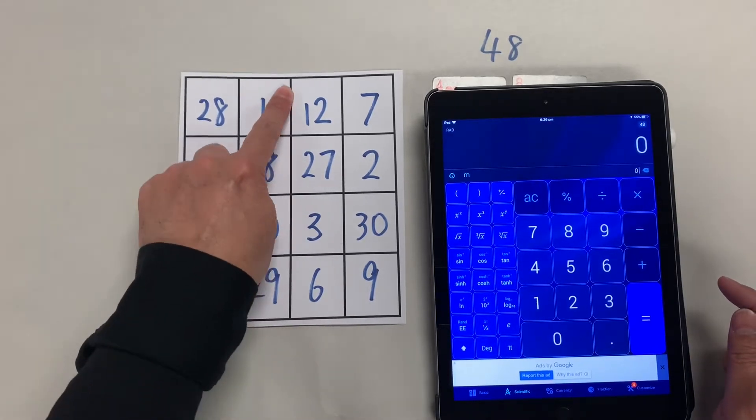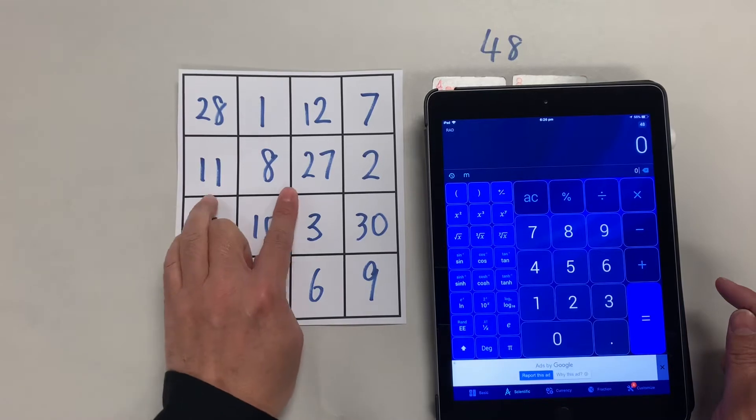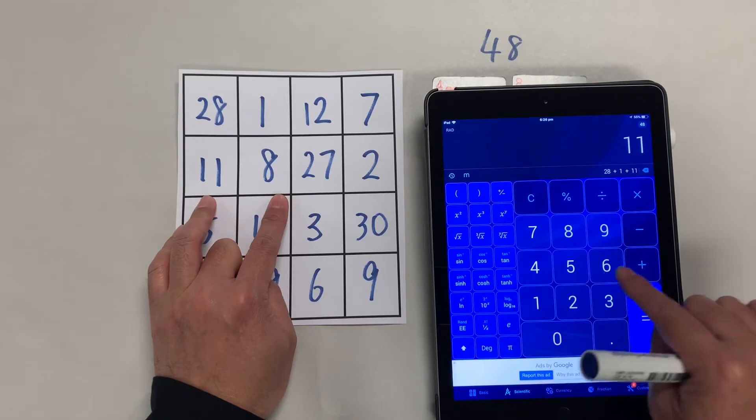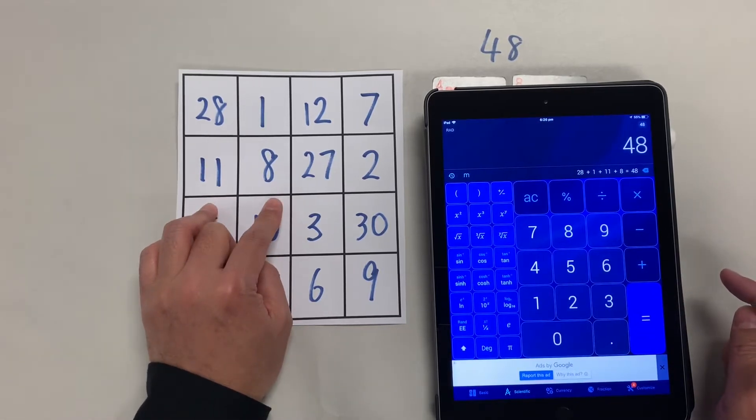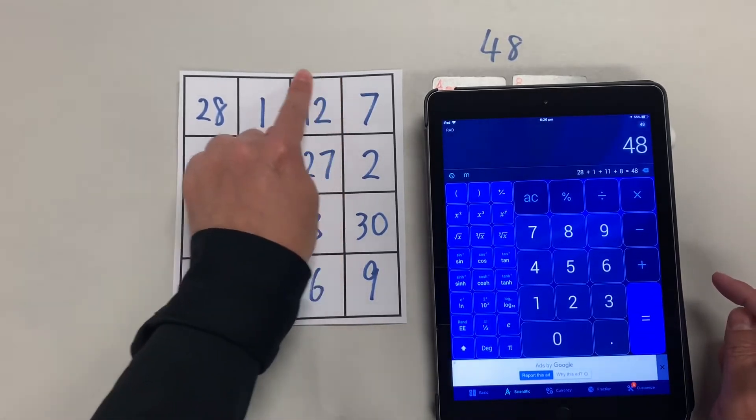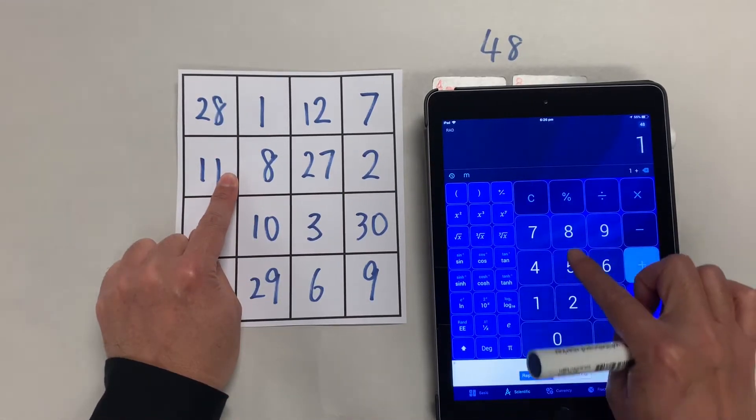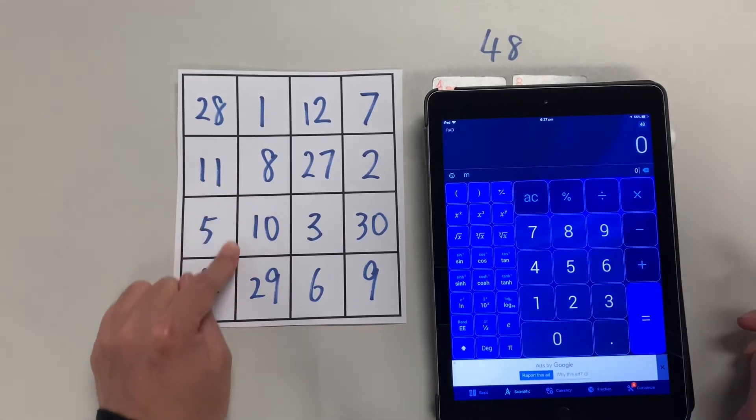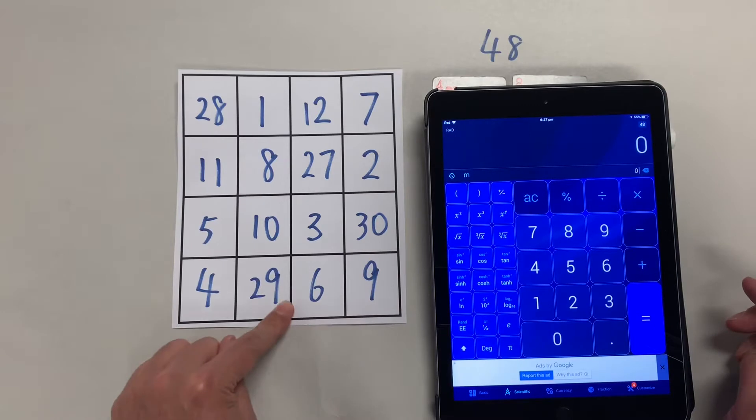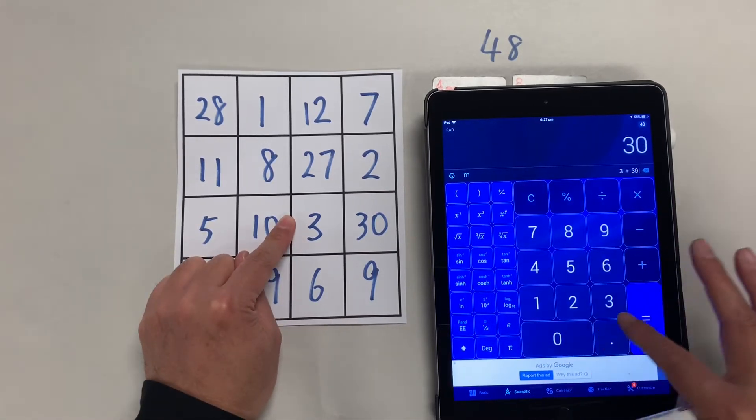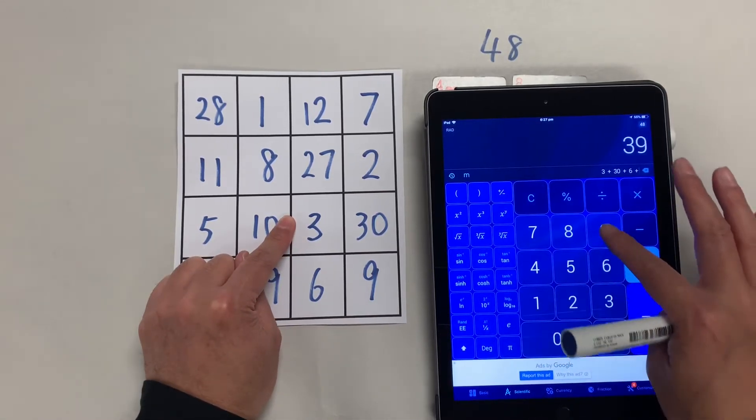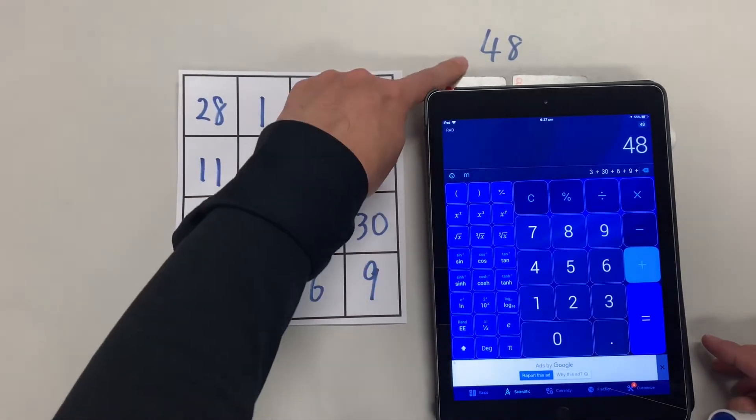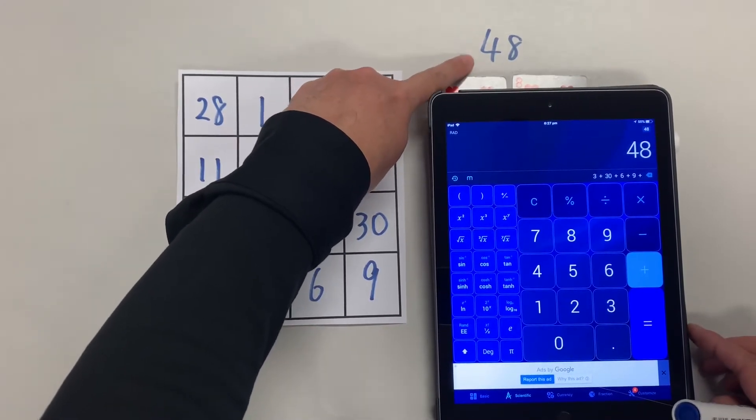See the square here, these 4 squares: 28, 1, 11, 8, that's 48. This square also: 1, 8, 12, 27 is 48. What? Would you like to check this square here? Now these 4 squares: 3, 30, 6, and 9 is 48. So this is a special magic square designated for you, 48.